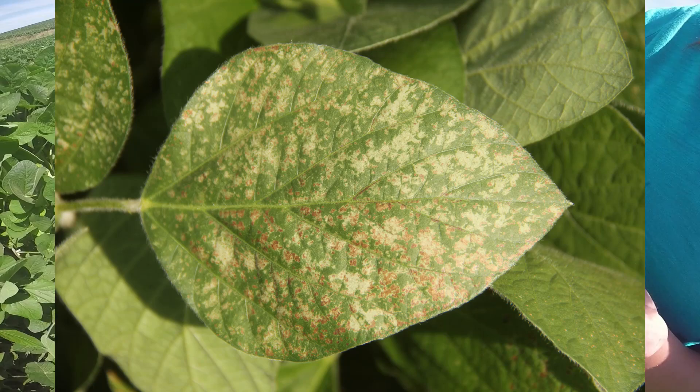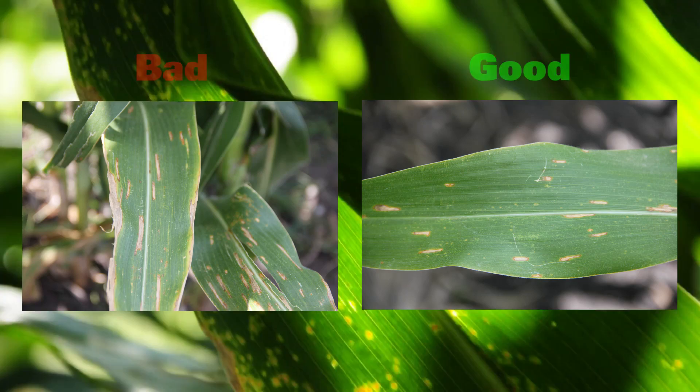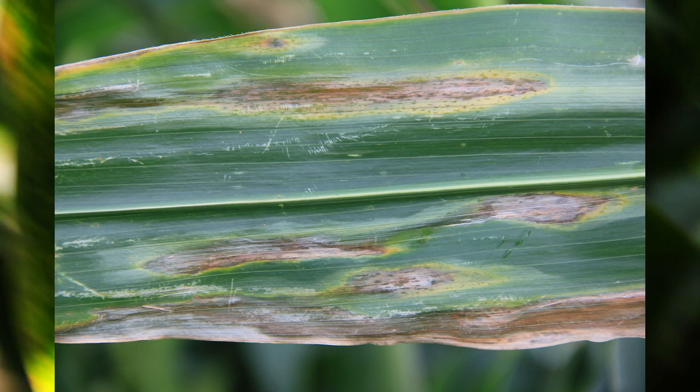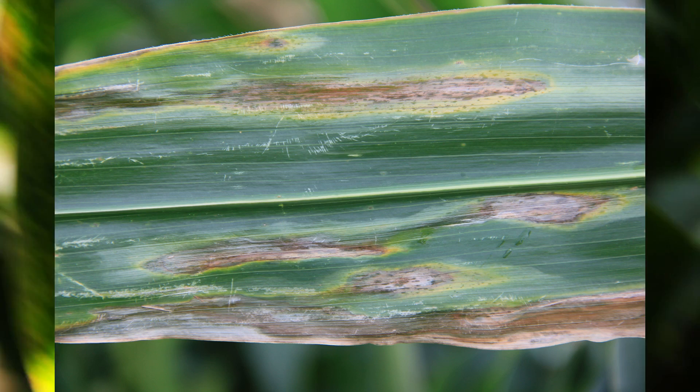Corn plants have long and lengthy leaves, so it's better to get an image of the length, not the width. When taking an up-close image of a corn leaf with a diseased lesion, make sure your camera is in focus with the diseased area being the focal point of the image.